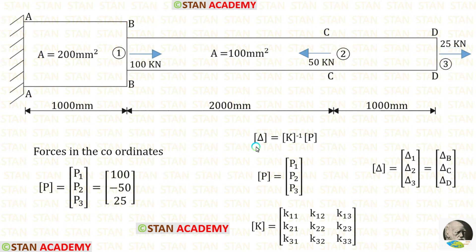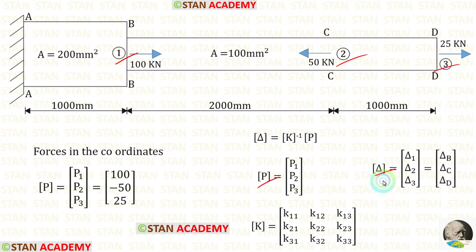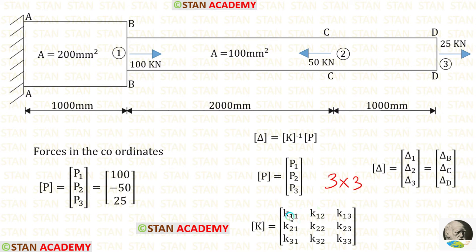The formula to find the displacement is: delta matrix equals K matrix inverse into P matrix. Since there are 3 coordinates, inside the P matrix and delta matrix we will have 3 values. The size of the stiffness matrix will be 3 cross 3, meaning inside the matrix we will have 3 rows and 3 columns.